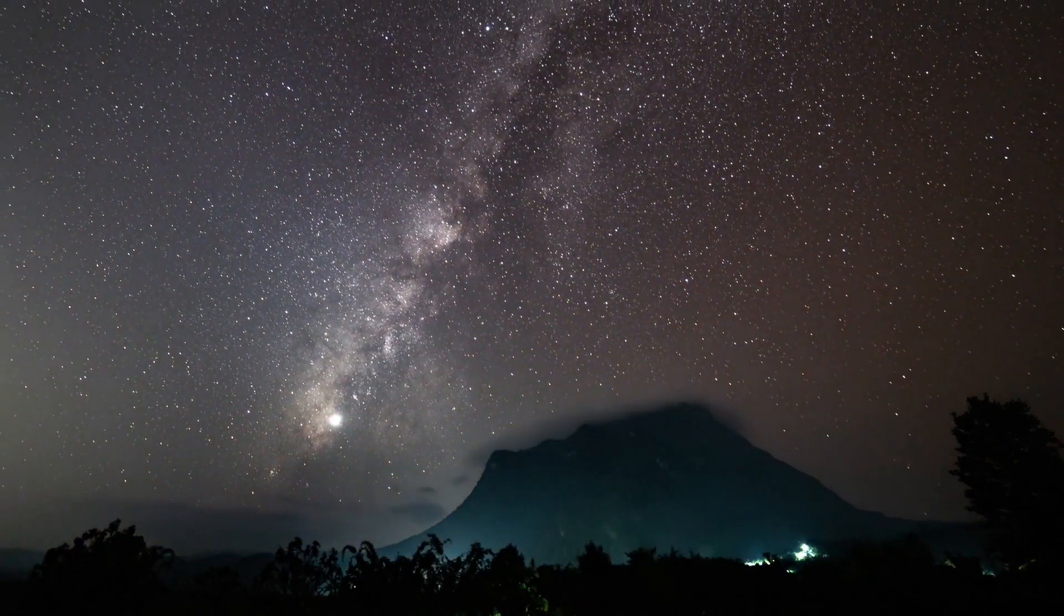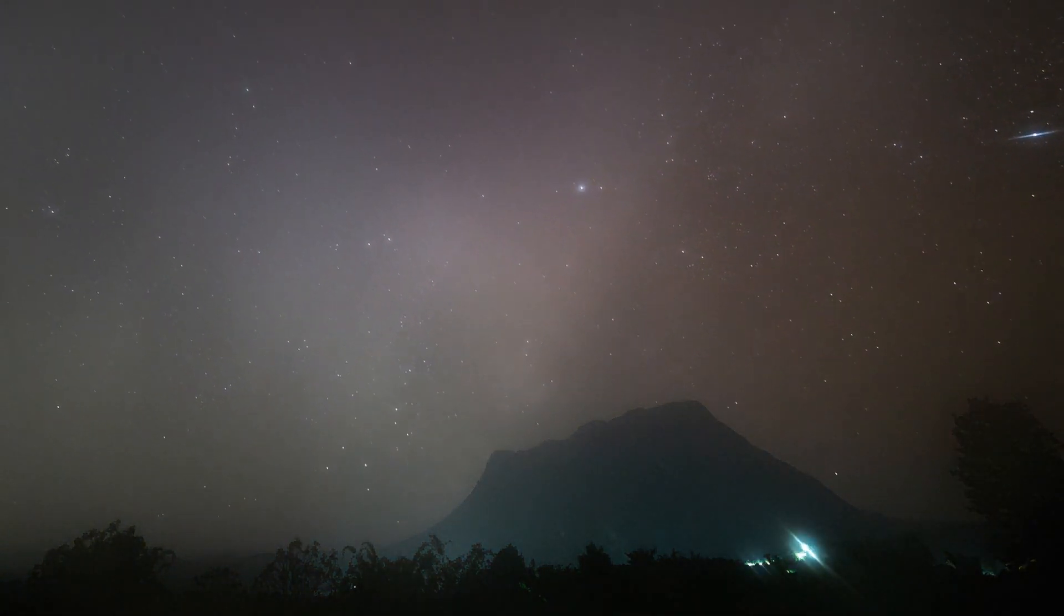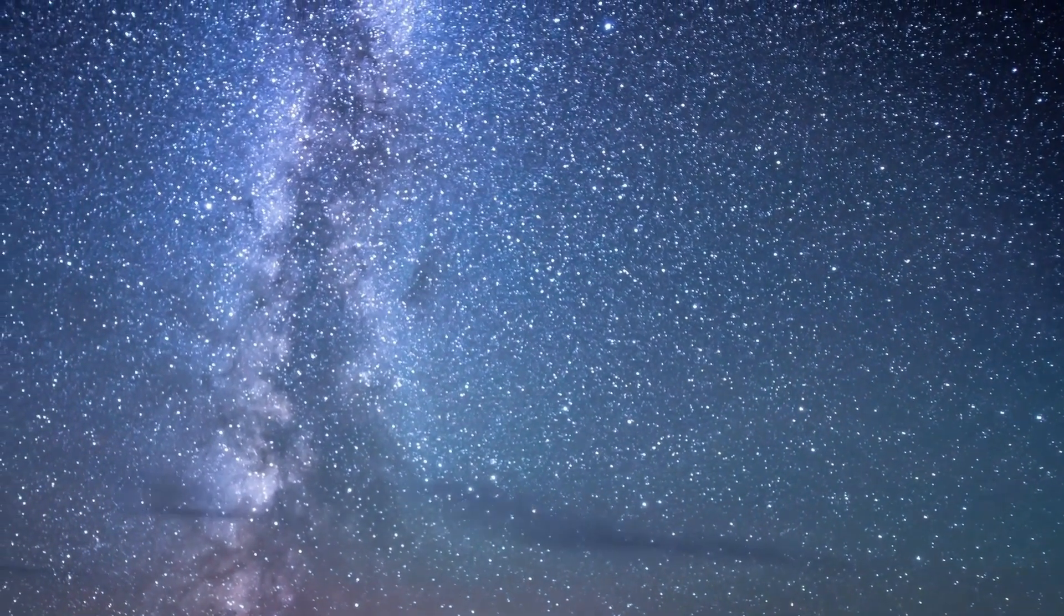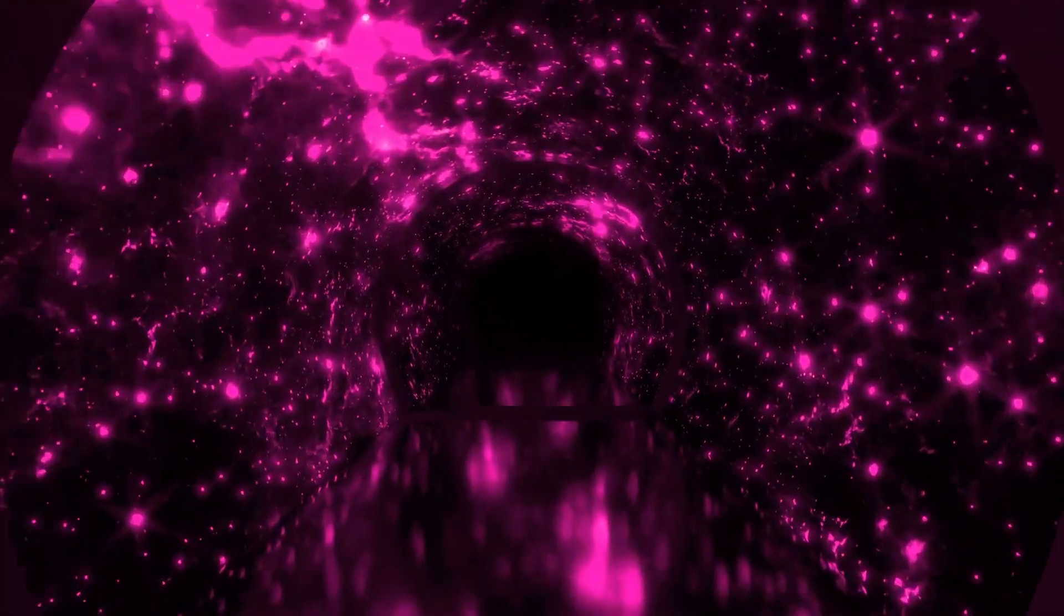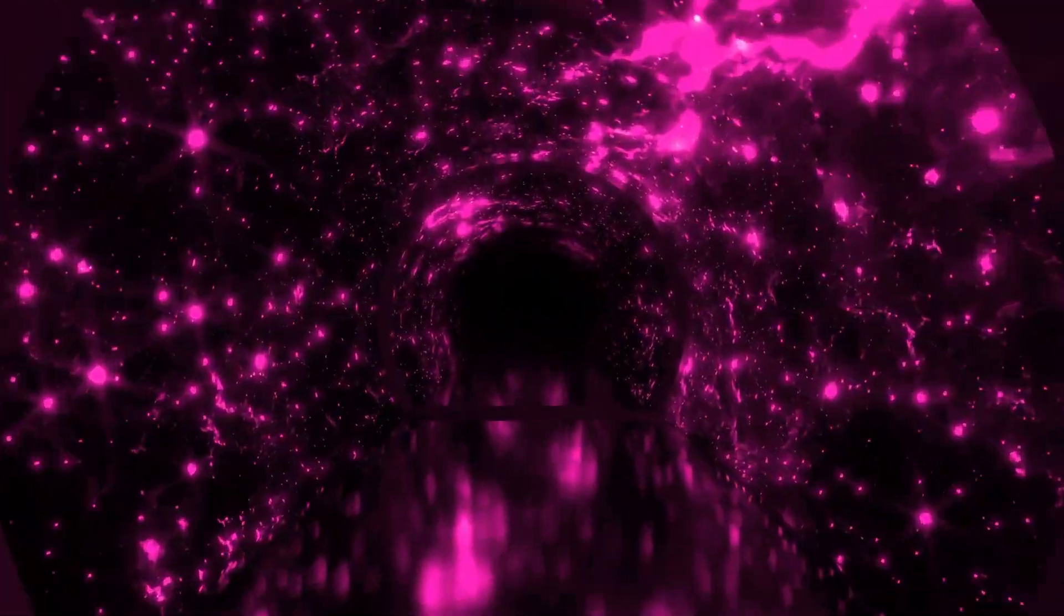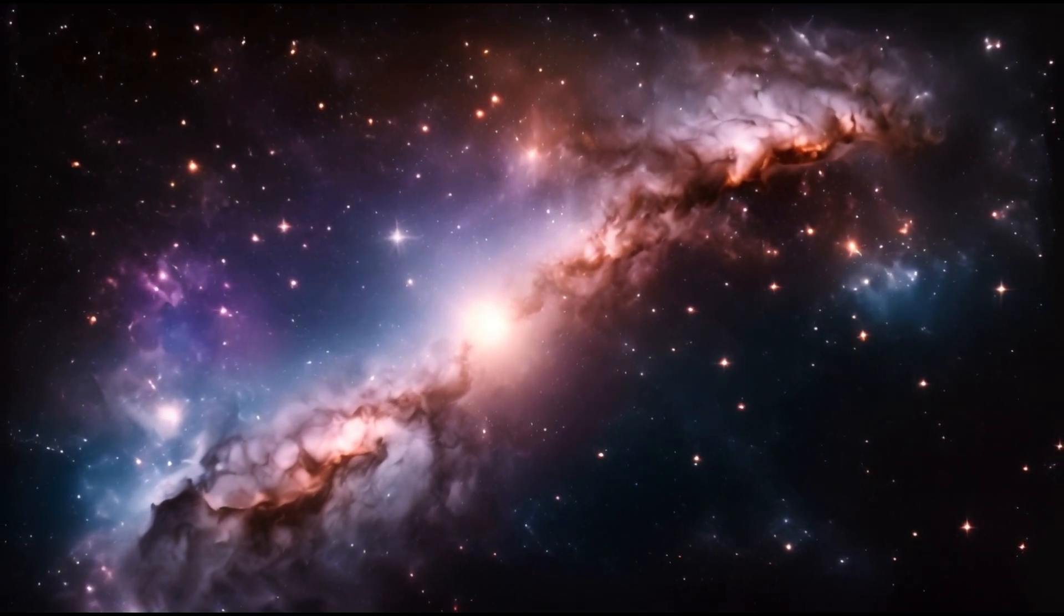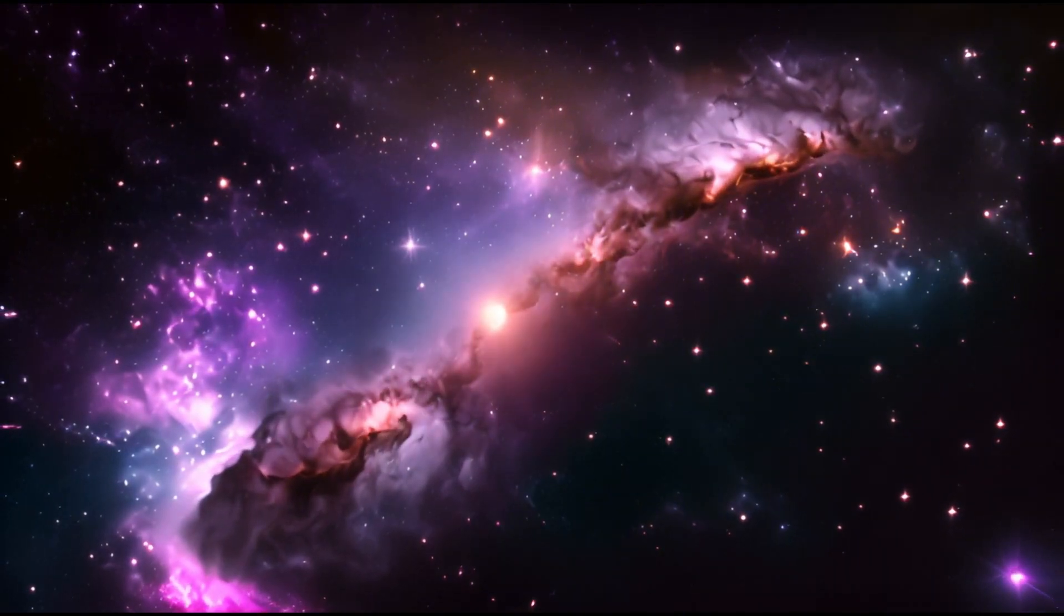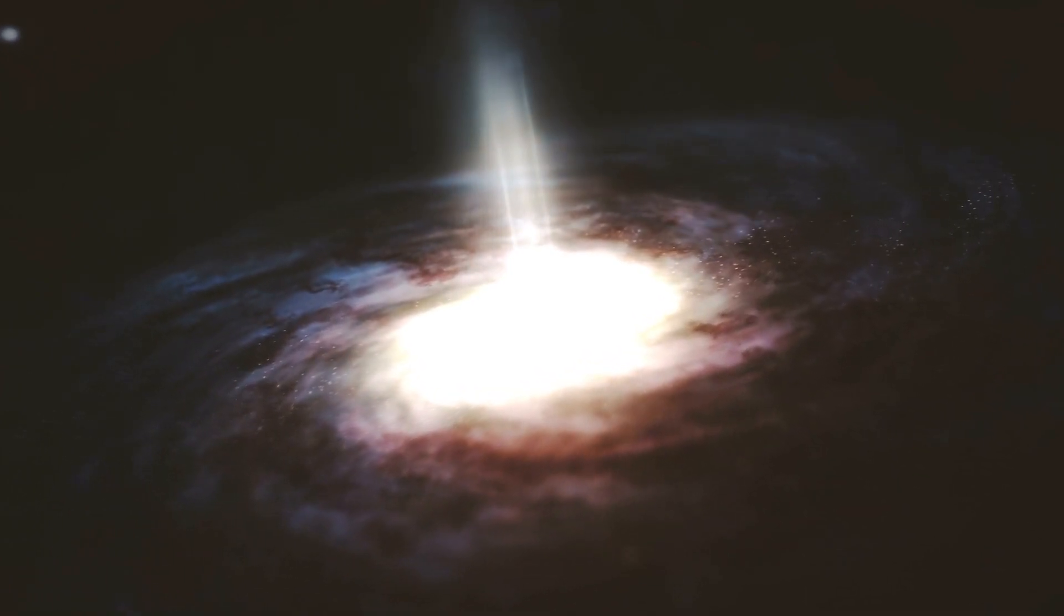Betelgeuse's impending or ongoing supernova event would mark a critical moment in this stellar life cycle. Researchers are particularly interested in the mechanisms that govern the transition from a massive star's final stages to its explosion. Current models suggest that as truly massive stars like Betelgeuse approach the end of their lives, they undergo a series of complex processes, including core collapse and the expulsion of outer layers. These stages are characterized by substantial mass loss, which can influence the star's brightness and variability. By observing Betelgeuse's changes, researchers can gain insights into these processes and refine their models of stellar evolution.